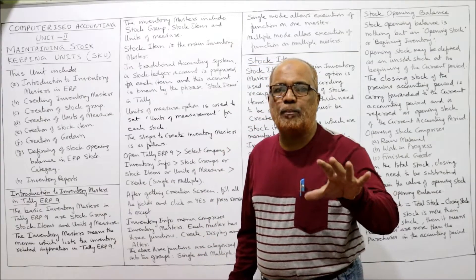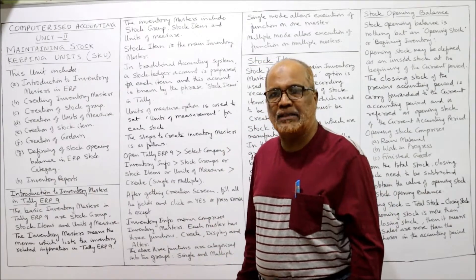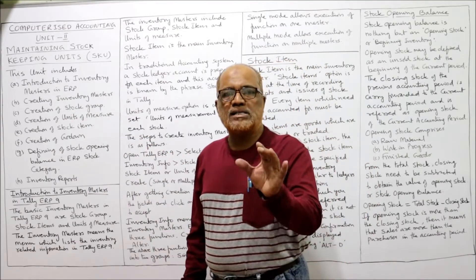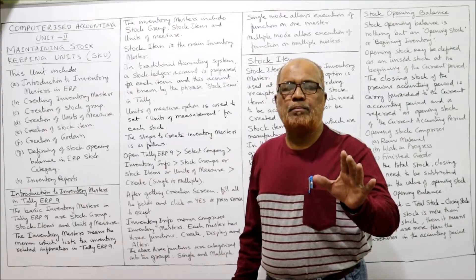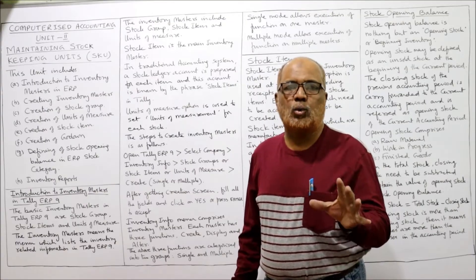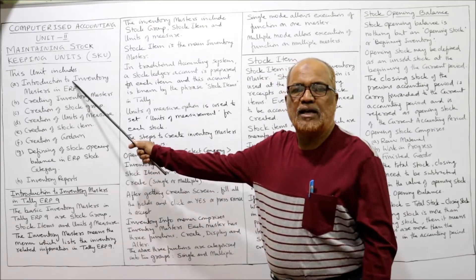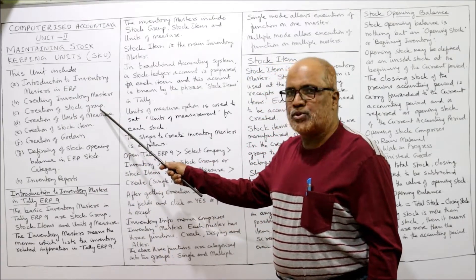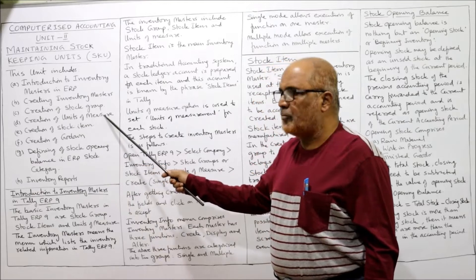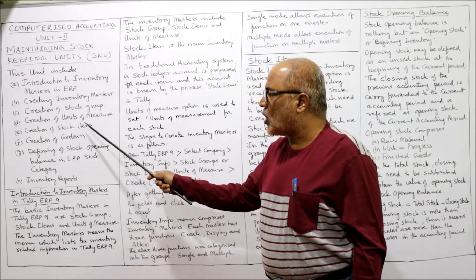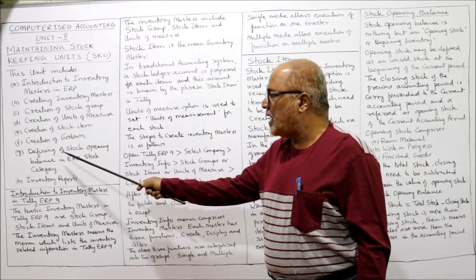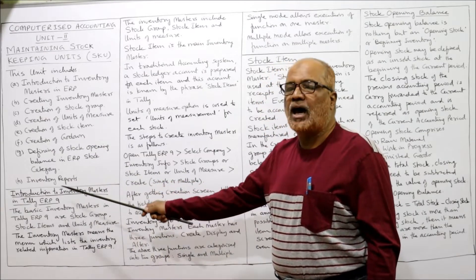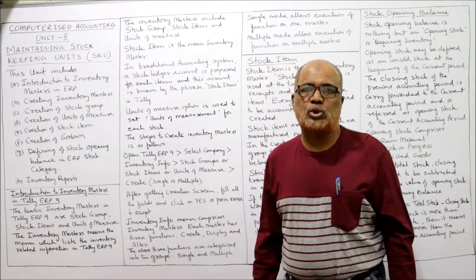First, I will discuss the topics which I am going to cover in this unit. First, introduction to inventory masters in ERP — what is inventory masters in ERP and what does it include. Secondly, creating inventory masters: creating stock groups, creating the units of measure, creating the stock items, creating go-downs, and defining of stock opening balance in ERP stock category. And lastly, inventory reports.